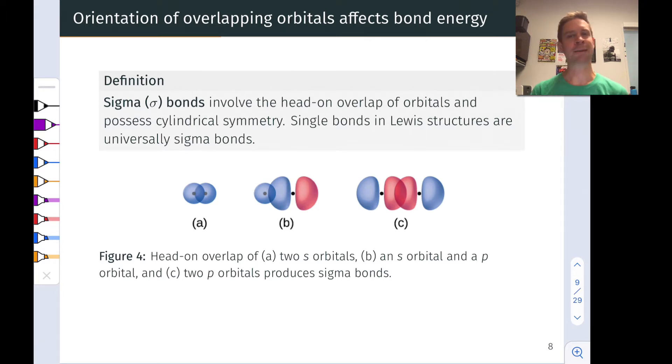The first type of overlap or bonding that we talk about in this context is known as sigma bonding. Sigma bonding is characterized by head-on overlap of the orbitals involved and cylindrical symmetry, meaning we can look down the bonding axis and we'll see a circle. Single bonds in Lewis structures are universally sigma bonds. So you can think of any single line you see between bonded atoms or the first bond of a double or triple bond as a sigma bond.